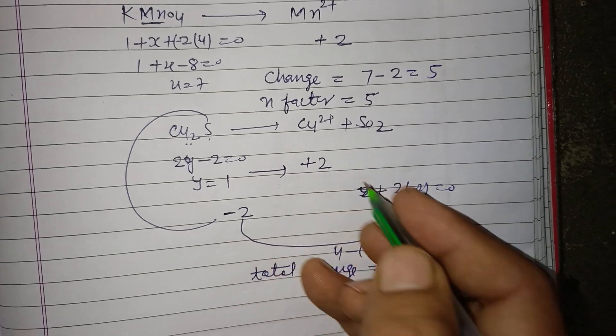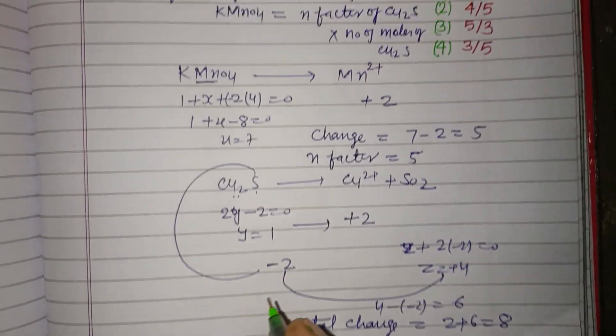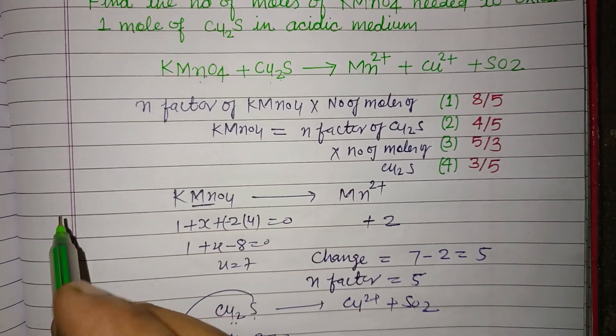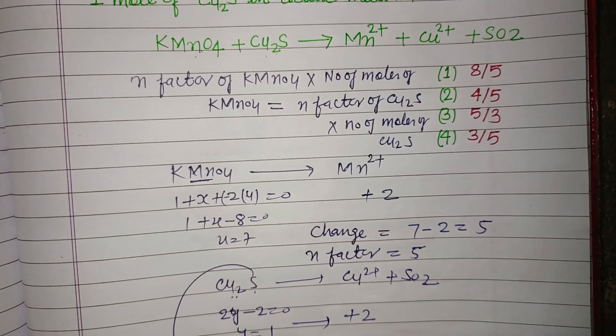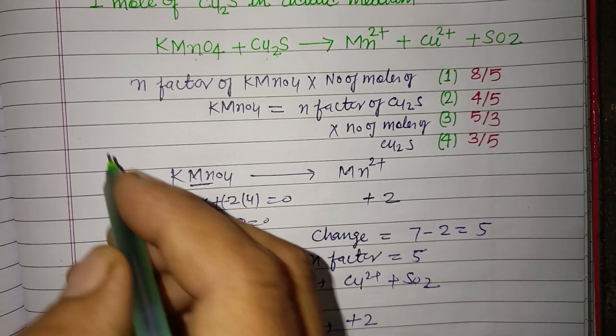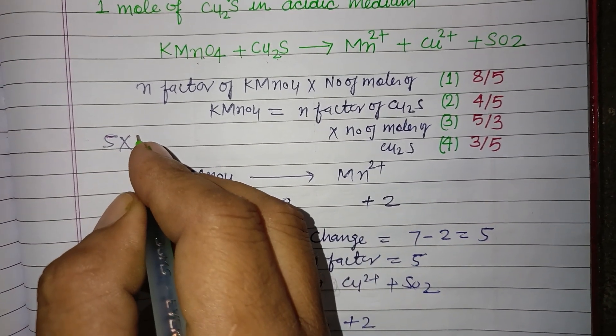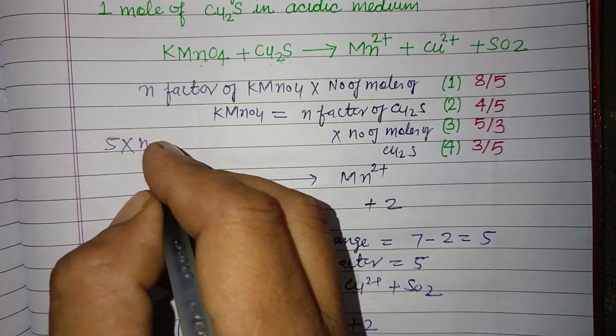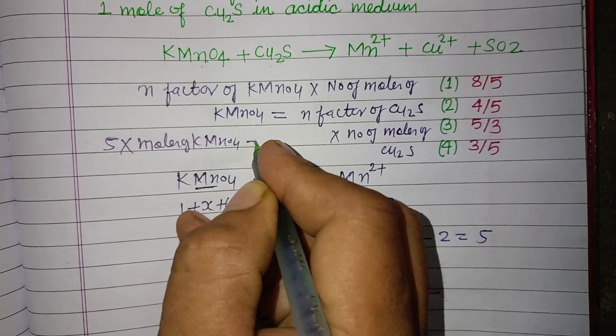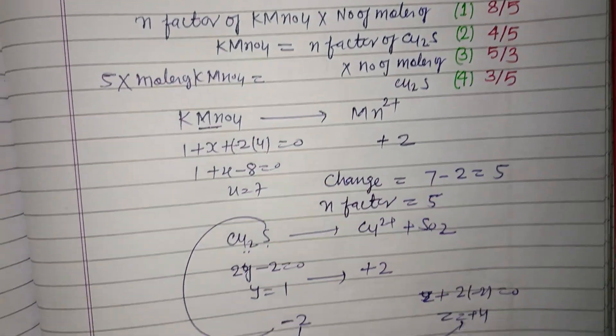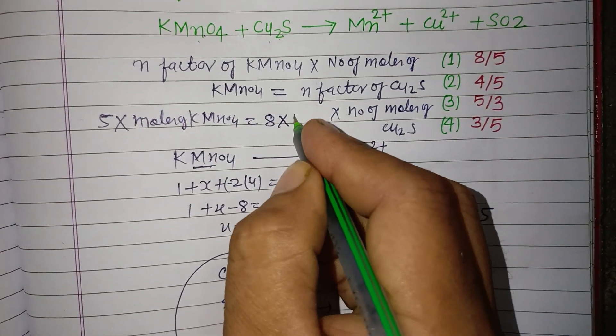Now, putting these values in the formula: n-factor of KMnO4, which is 5, times the number of moles of KMnO4